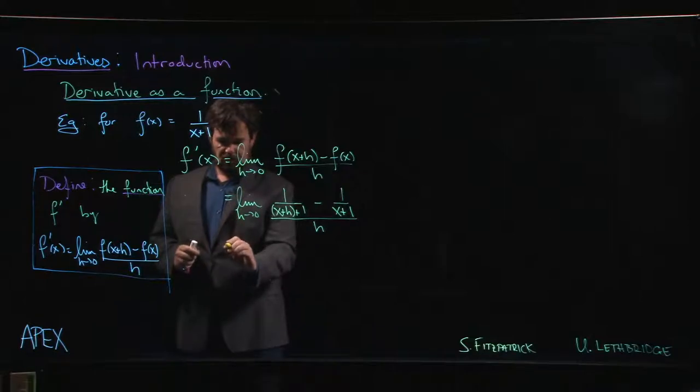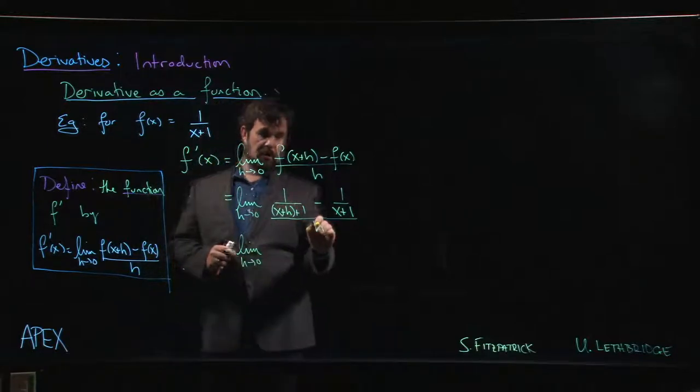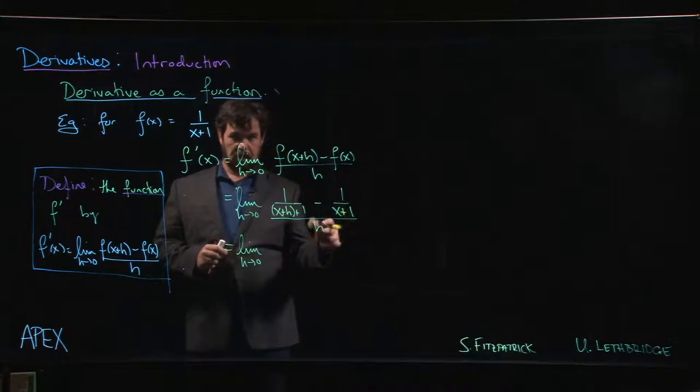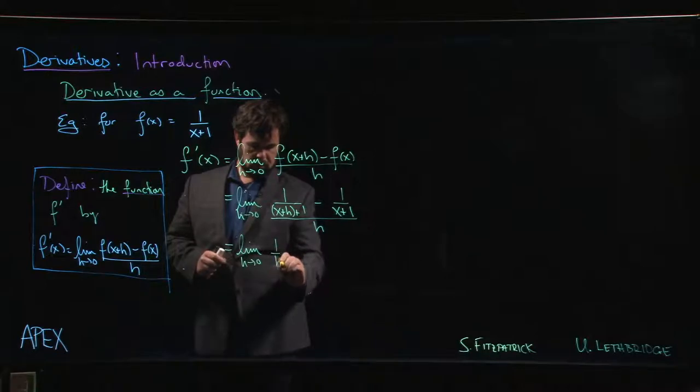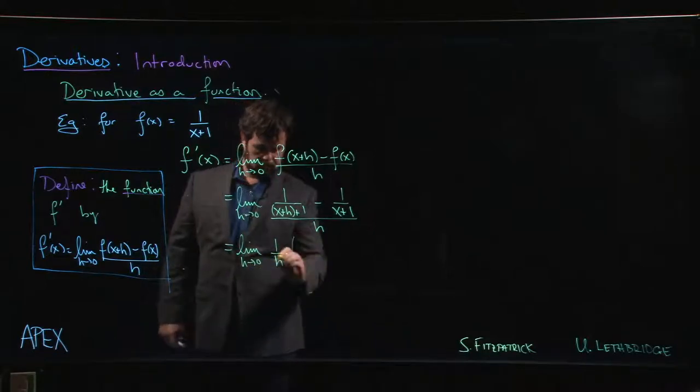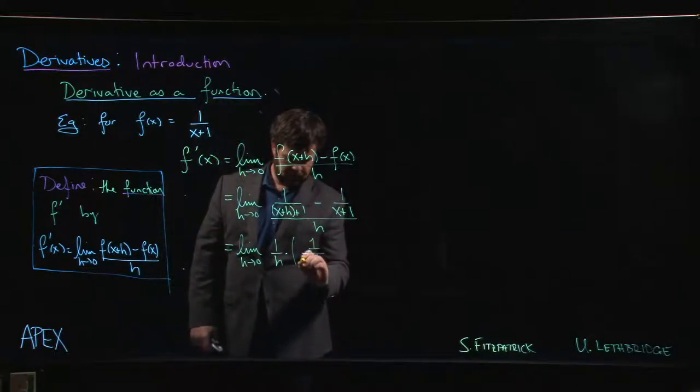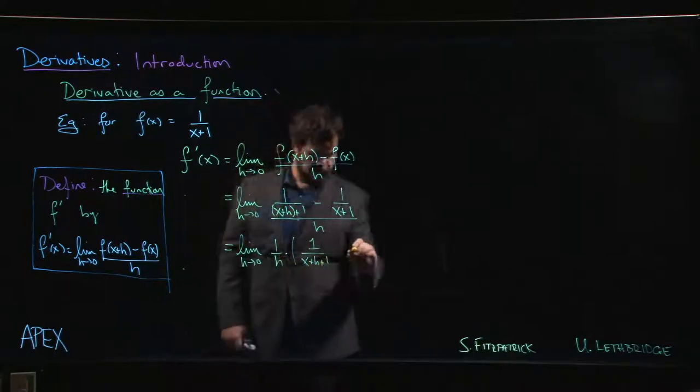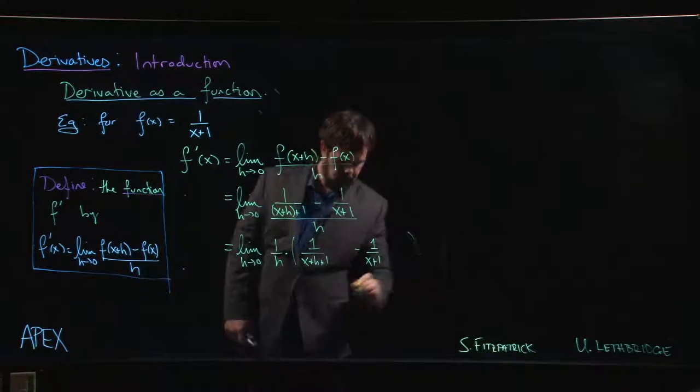The easiest way to keep yourself from getting into trouble is to remember that dividing by h is the same thing as multiplying by the reciprocal, by 1 over h. So put a 1 over h out front and then write your remaining fraction: x plus h plus 1, leave myself a bit of room, 1 over x plus 1. Okay, next step.